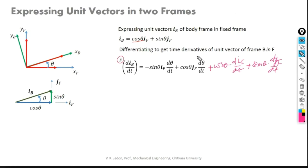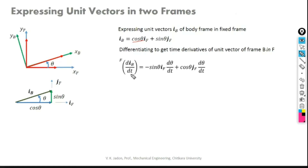The derivative terms for the fixed frame unit vectors IF and JF will be zero, and that is why they are not appearing in the result. I suppose everyone understands how we have differentiated this. So we can go on to find the other component.